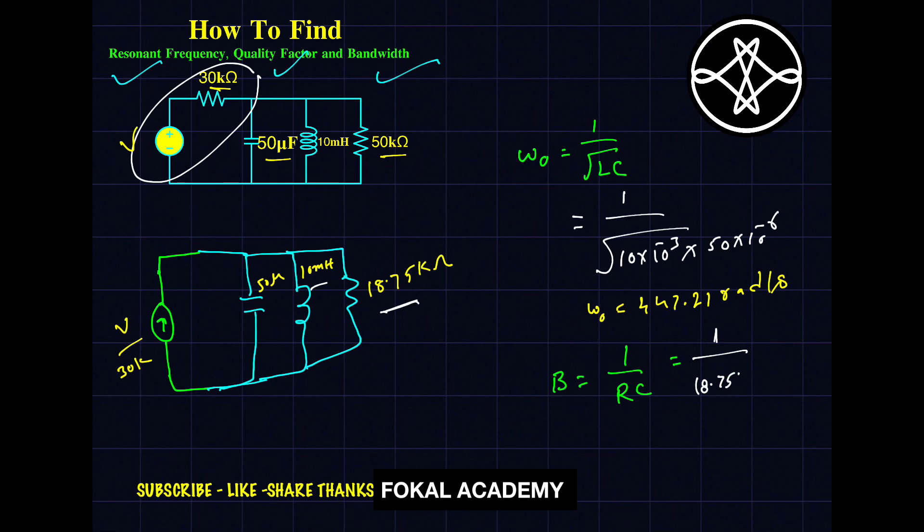50 microfarad, 50 into micro means 10 power minus 6. By simplifying this, we will get 1.067 radians per second.